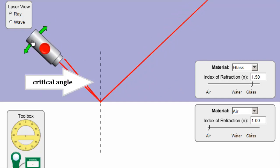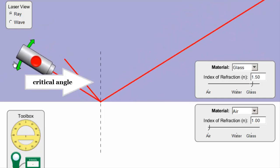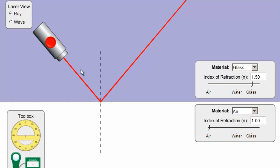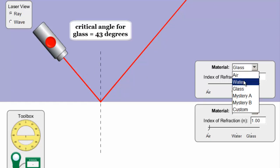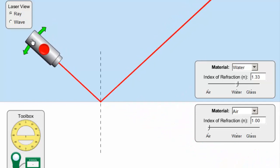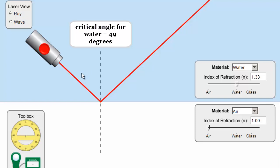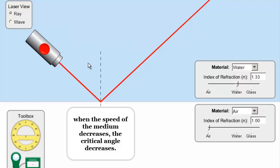Here we see the critical angle for glass - it's about 43 degrees. If I change this to water, I actually have to go to a larger angle before I get my total internal reflection, about 49 degrees. What this really means is that it's easier for light to escape water than glass. As the speed in the medium gets slower and slower, like from water to glass to other materials with even slower speeds, it gets harder and harder for the light to escape.